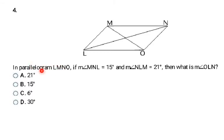This problem gives us a parallelogram. Once copied down, you can fill in angles: angle MNL is 15 degrees and angle NLM is 21 degrees. It asks for angle OLN. Because it's a parallelogram, opposite angles are congruent, so this piece is 21 and this piece is 15 degrees. The answer is B, 15 degrees.